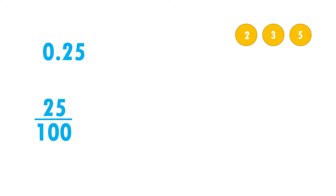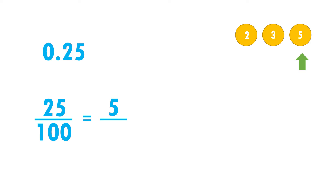Now to simplify our fraction, we always try to divide by 2, by 3, or by 5. First I check if we can divide by 2 — 100 can be divided by 2 but not 25, so I move on. 100 cannot be divided by 3 and neither can 25. Now I go to 5: 25 divided by 5 gives me 5, and 100 divided by 5 gives me 20. Then 5 divided by 5 gives me 1 and 20 divided by 5 gives me 4. Therefore 0.25 is equal to 1/4, along with its equivalent fractions.